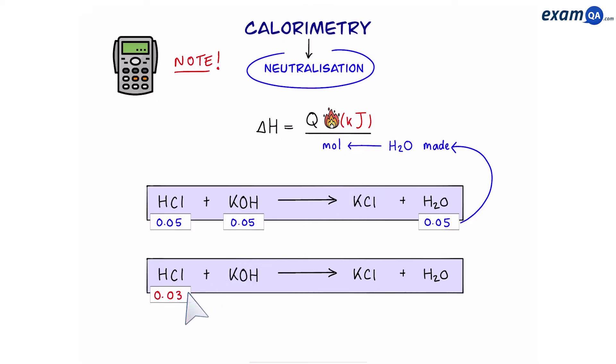However let's say I have 0.03 moles of hydrochloric acid and 0.05 moles of potassium hydroxide. Now we can see that one of the reactants are limiting and we use the limiting reactant when we work out the moles of water. So in this case we're going to have 0.03 moles of water and that's going to go in the equation. Now I've made a separate video on limiting reactants for GCSEs. However I know that A levels are very demanding. So instead of making you watch that video I'll just do one final example.